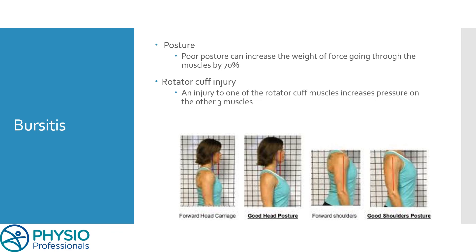The other risk factor for bursitis is a rotator cuff injury. If you've got your ball hanging from the roof and you've cut one of your strings, you've then increased the force the other three strings need to produce to hold the ball up — and it's the same thing in your shoulder. This increased force from the remaining muscles can cause them to get injured or inflamed, or it can cause the bursa to become inflamed. It's very common to see scans that show both an inflamed or injured rotator cuff and also a bursitis — so that's not something to be alarmed about.